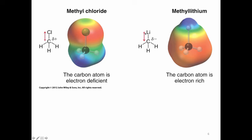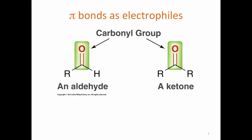In the case of the organolithium, the lithium is more electropositive and the carbon is more electronegative, so that carbon atom is electron-rich and nucleophilic. We can see that reflected in the electrostatic potential maps, which show where the electron density is located on the molecule — red meaning highest electron density. Notice in the nucleophilic carbon, there's most electron density on the carbon, whereas in chloromethane, most of the electron density is on the chlorine, and the least amount is on the carbon. In this section, we're going to be studying pi bonds as electrophiles, concentrating on aldehydes and ketones.